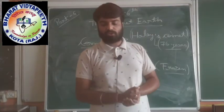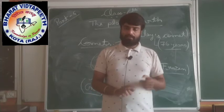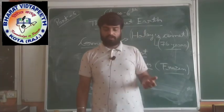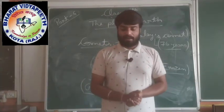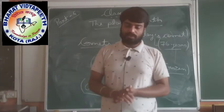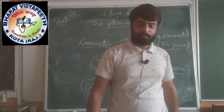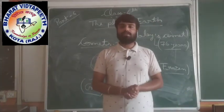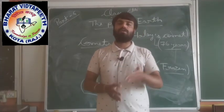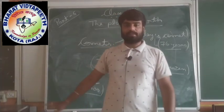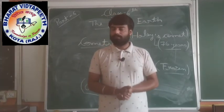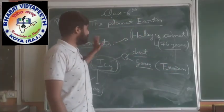So these are the four terms I have explained: asteroids, meteors, meteorites, and comets. Remember them carefully, and if you have any doubts you can ask. This was part number 6, which also completes our chapter 'The Planet Earth.' Keep your question answers complete and learned, and watch this video carefully. Thank you.